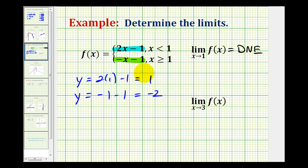That doesn't mean all limits for this function don't exist. If we look at the limit as x approaches 3 of the function, when x equals 3, we'd be on the line y equals negative x minus 1. And as we approach 3 from the left, as long as x is greater than or equal to 1, we'd still be on this line.